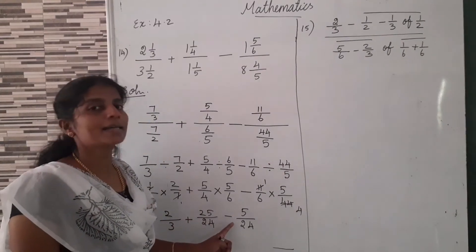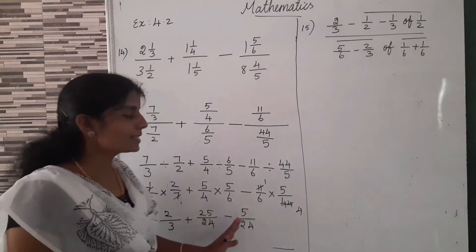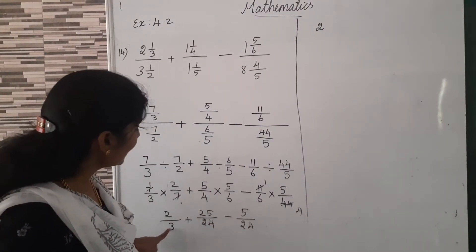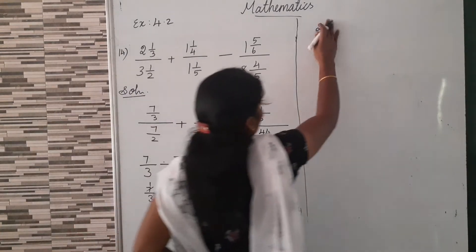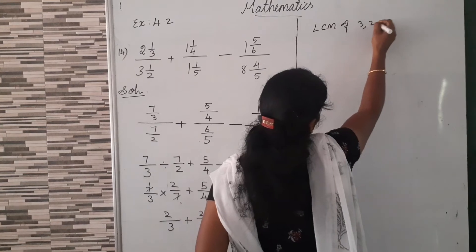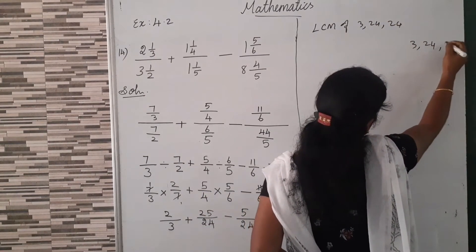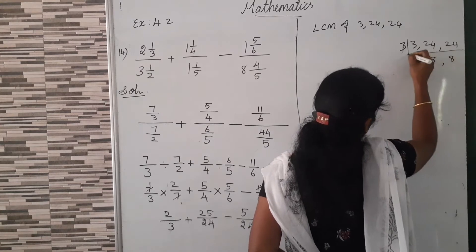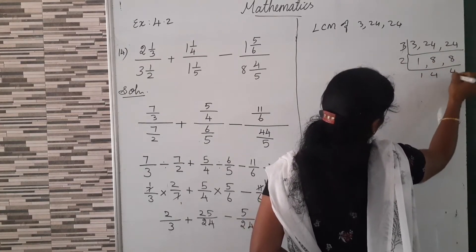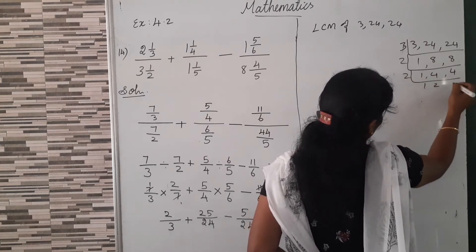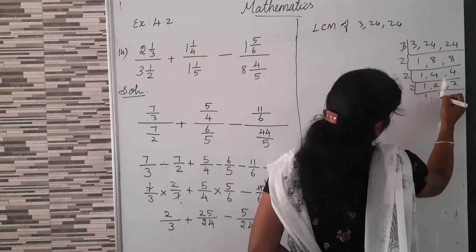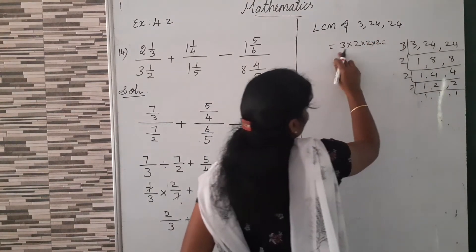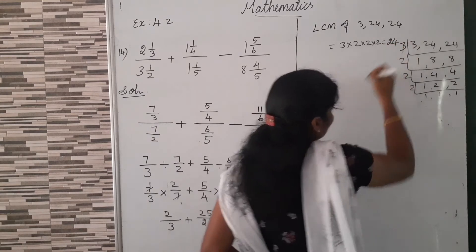Now we can add these fractions. We need the same denominator. So we can write the LCM of 3, 24, and 24. Using the 3 table: 1, 8, 24, 24. Then 2 table: 1, 4, 8, 4, 8. Then 2 table: 1, 2, 4, 2, 4. Then 2 table: 2, 1, 1, 1. What's the LCM? 3 into 2 into 2 into 2 equals 3 twos are 6, 6 twos are 12, 12 twos are 24. So 24 is the LCM.